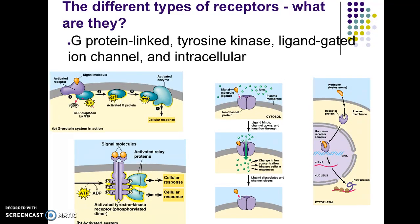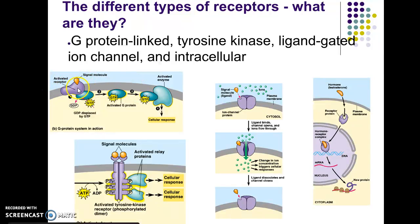In the reception phase, your receptor protein can be one of three types of transmembrane proteins: a G protein-linked receptor (GPCR, or G protein-coupled receptor), a tyrosine kinase (RTK, receptor tyrosine kinase), or a ligand-gated ion channel. There's also a fourth kind, which is an intracellular protein. These first three are all transmembrane proteins, meaning they span the membrane.